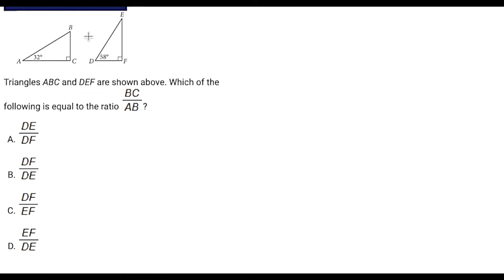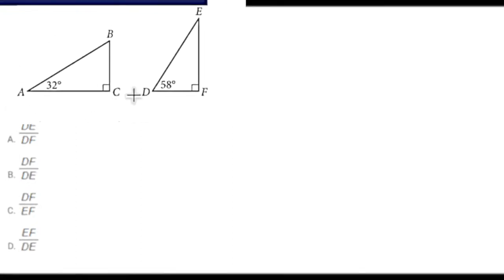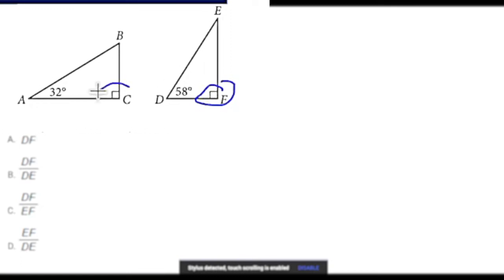So on this one, for example, these are similar triangles. How do we know? We've got a right angle that they share. We've got 58 degrees. 180 minus 58 minus 90 is going to be 32. So this leftover one has to be 32. They share the same angle, so they're similar.